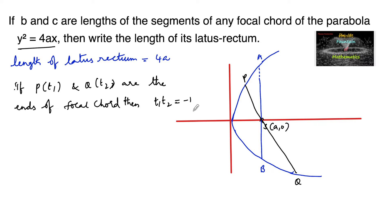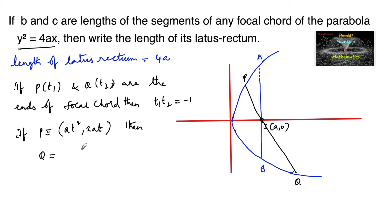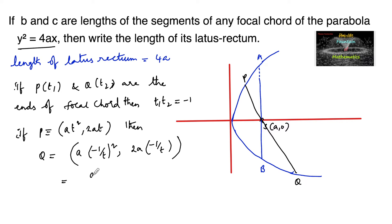So if P is given at (at², 2at), then the coordinates of Q can be considered as a(−1/t)² = a/t² and 2a(−1/t) = −2a/t. That is, the coordinates of Q can be taken as (a/t², −2a/t).